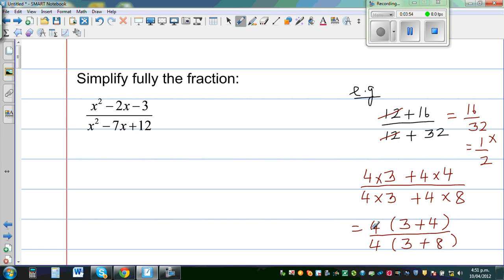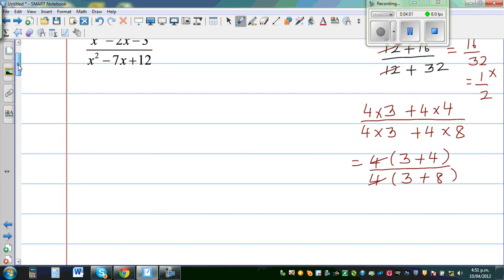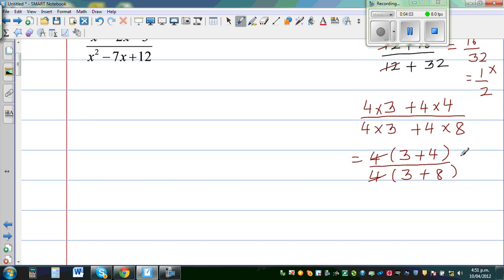And so 4 and 4 you can cancel at this stage. When it is in a product form you can cancel. Not when it is in an additive form. So this is nothing but 7 out of 11.